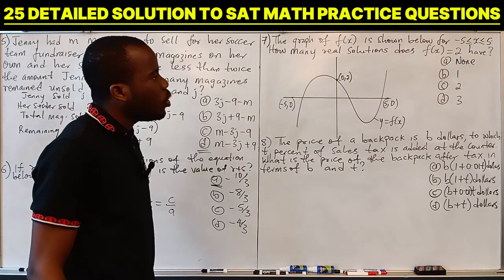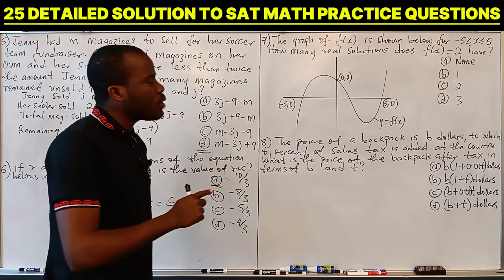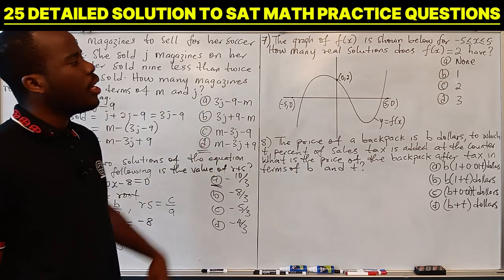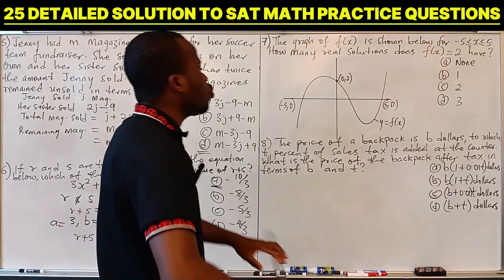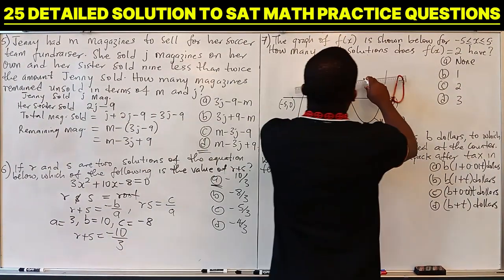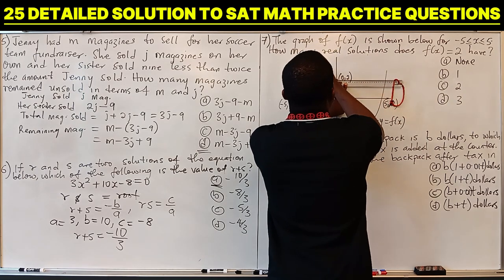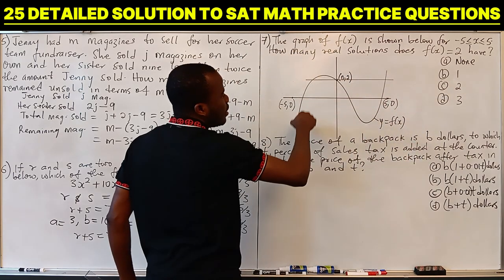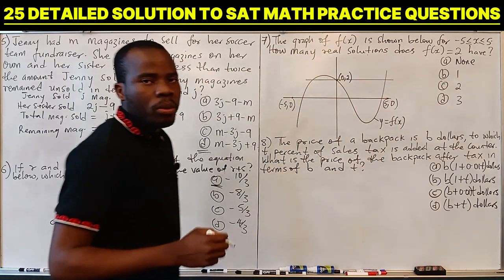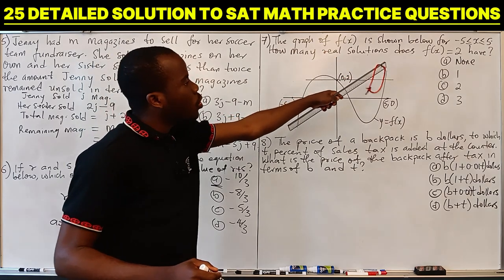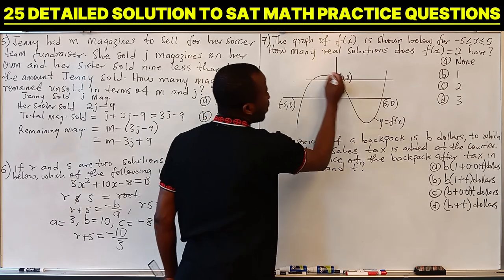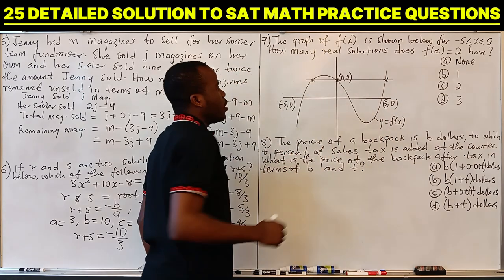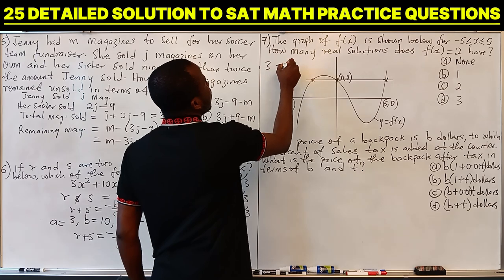Question 7: the graph of f(x) is shown for X between minus 5 and 5. How many real solutions does f(x) equals 2 have? The solutions of f(x) equals 2 are the points where the graph of the function and the horizontal line Y equals 2 intersect. Counting those intersection points gives 1, 2, 3 — therefore it has 3 solutions.